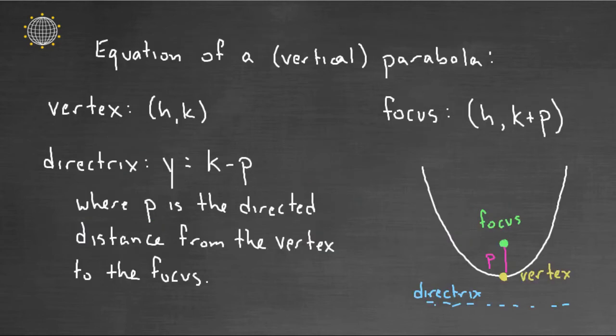All right now how do you write the equation of a parabola though? Well that again depends on the vertex and the focus and the directrix. So let's say for example we had a vertex at the point (H, K). So this point right here we're gonna call that (H, K). Well then notice the focus and the directrix actually depend on the distance away from the vertex that we're talking about. So let's call that distance P.